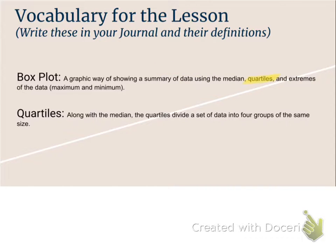That's exactly right — quartiles essentially break your data into four equal groups, and you use the median to help do that. A quartile, along with the median, divides a set of data into four groups of the same size. Make sure that you write those definitions down in your journal or on your paper, and with that we will get going on our very first problem.